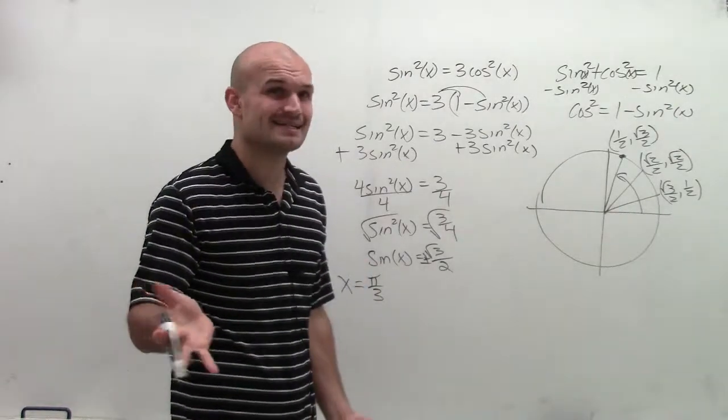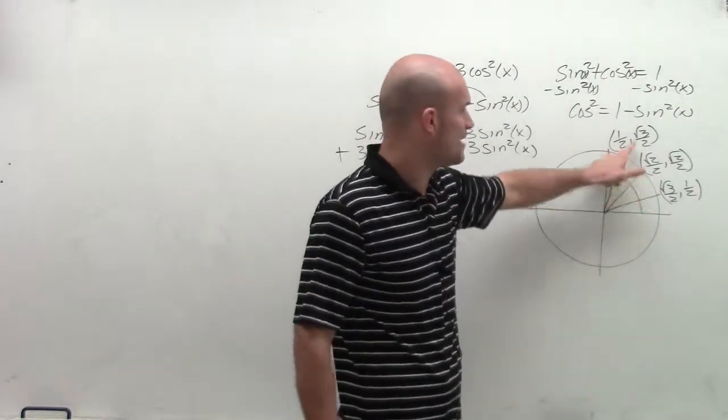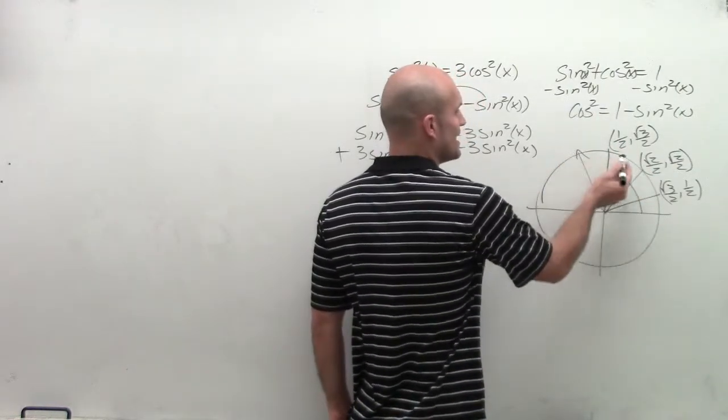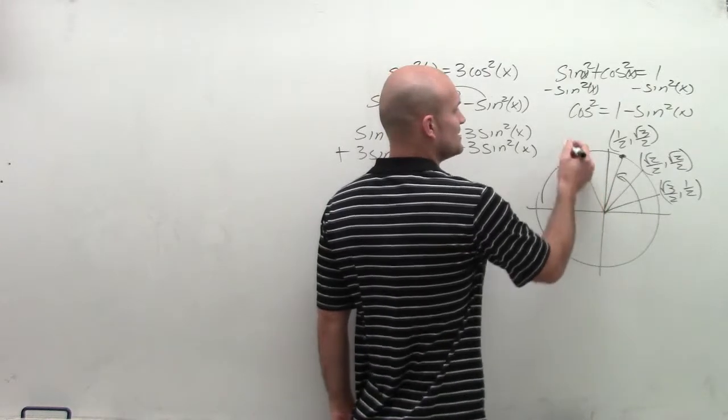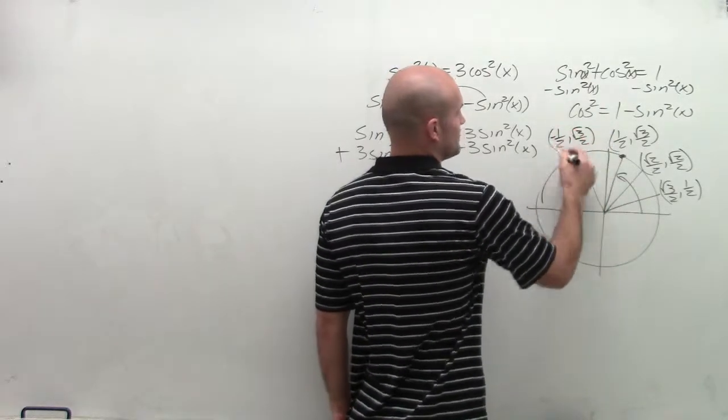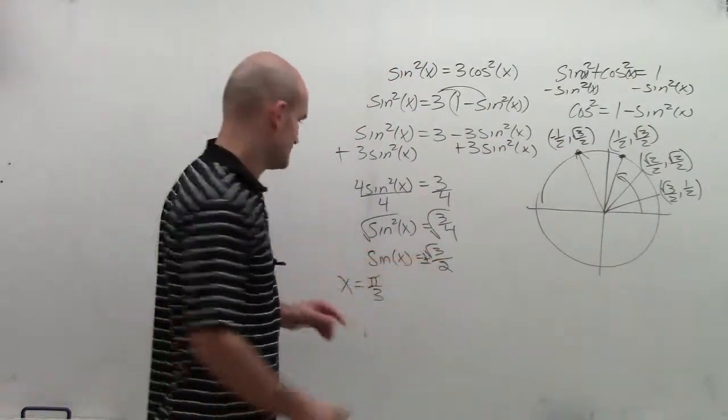But that's not it, is it? Because now I know that x equals pi over 3. But what about at 2 pi over 3? If I reflect over the y-axis, my y value is still going to be the same. But now I'm dealing with a negative square root of 3 over 2. So therefore, that's going to be the negative square root of 3 over 2.